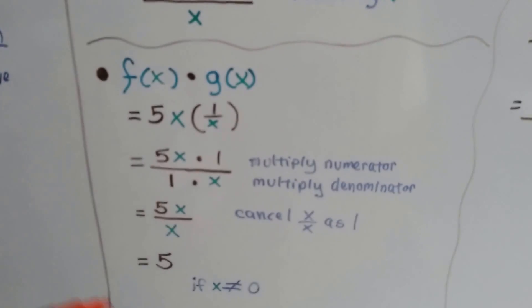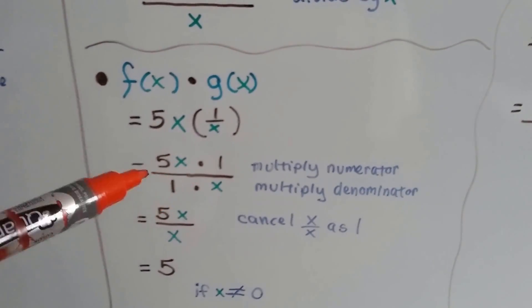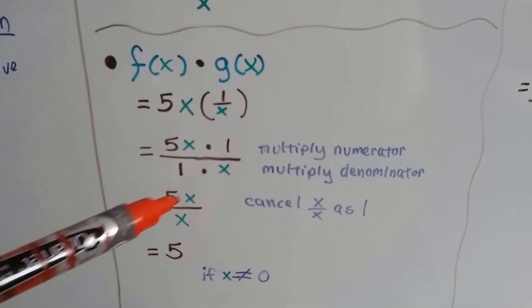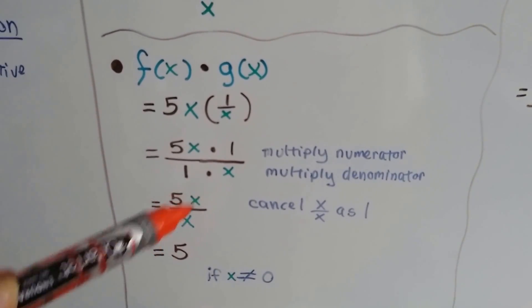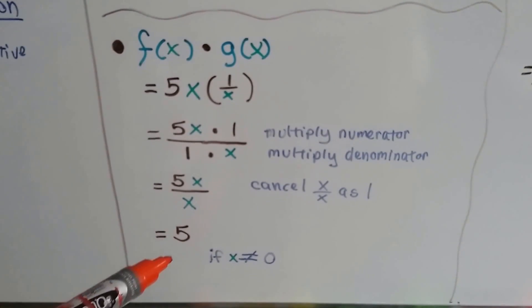If we want to multiply them, we do 5x times 1 over x. We just multiply the numerator and denominator. We can put this one over 1. And we end up with 5x over x, and these cancel out as 1 by the identity property, and we end up with just 5.